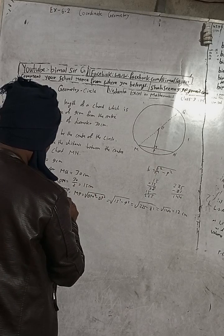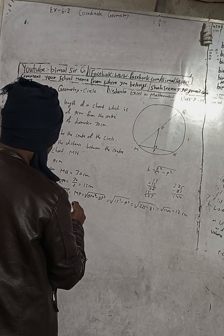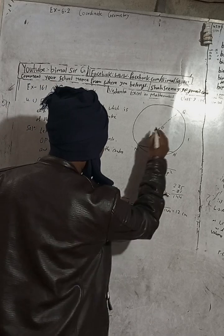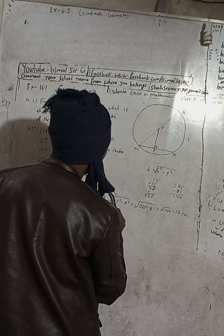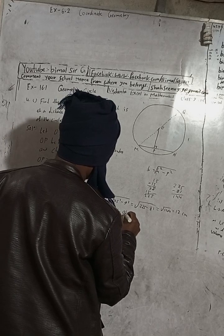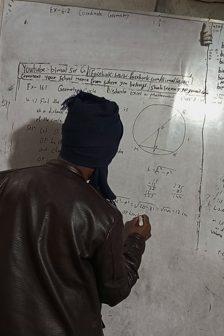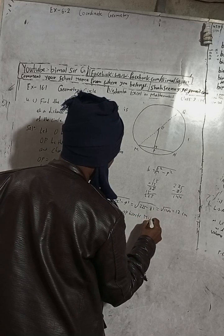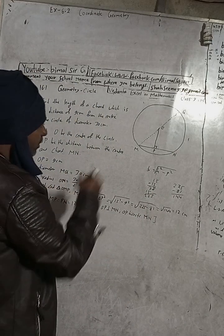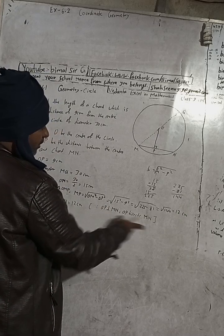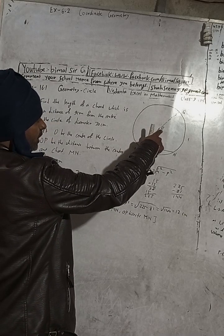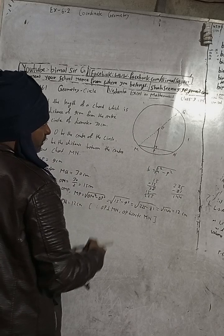MP is equal to PN, and PN is also equal to 12 cm. The reason for this is that OP is perpendicular to MN, and the theorem — which we already learned in question 3 — states that the perpendicular drawn from the center of the circle to the chord bisects the chord.